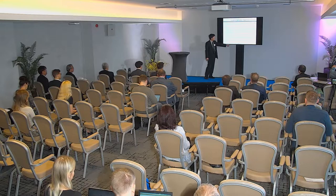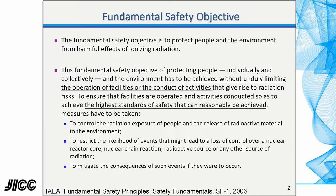As you know, this is in the IAEA document SF-1, Fundamental Safety Principles. It defines the safety objective as: the fundamental safety objective is to protect people and the environment from harmful effects of ionizing radiation. The purpose covers people and the environment both. But it added one more important sentence: this objective has to be achieved without unduly limiting the operation of the facility or the conduct of activities that give rise to radiation risks.